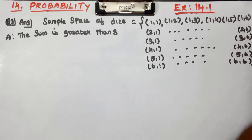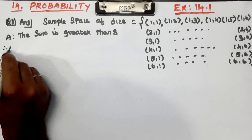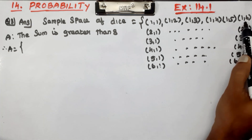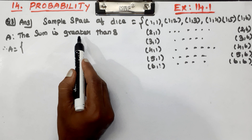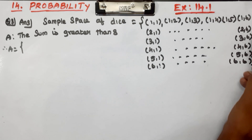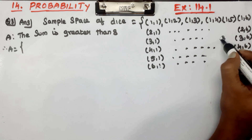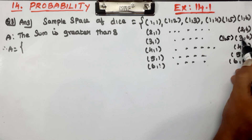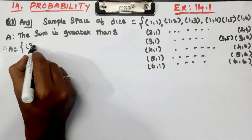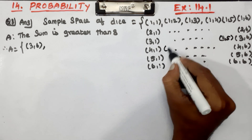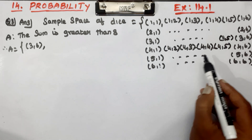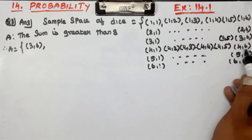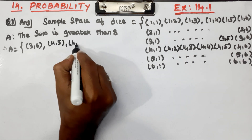For Event A, the sum must be greater than 8 — that means equal to 9 or more. For example: (1,1) equals 2, (1,6) equals 7, (2,6) equals 8 — that is equal to 8, not greater. (3,5) equals 8, (3,6) equals 9 — this value is greater than 8. (4,5) equals 9, (4,6) equals 9 — also greater than 8.